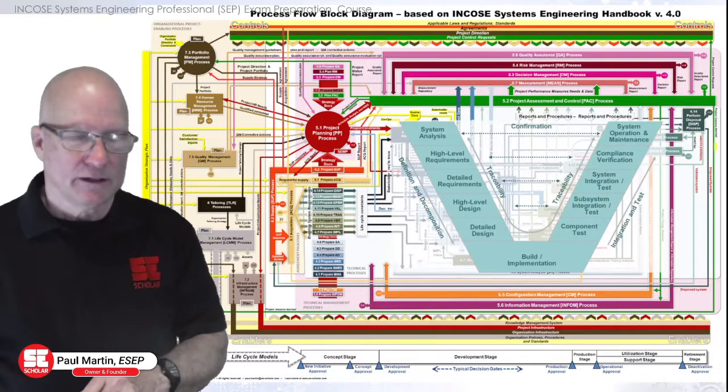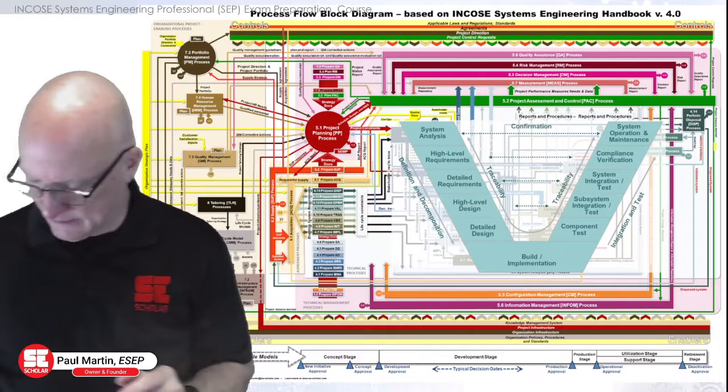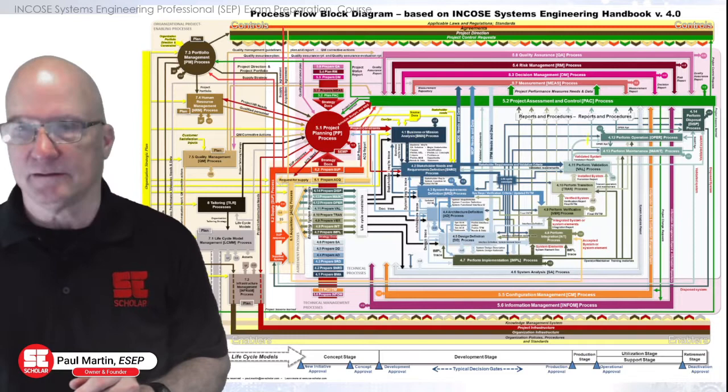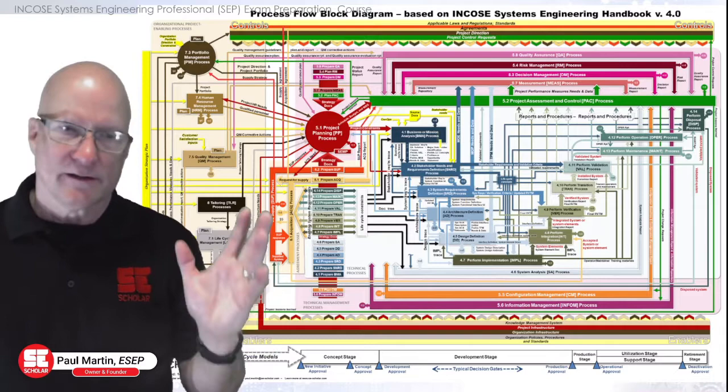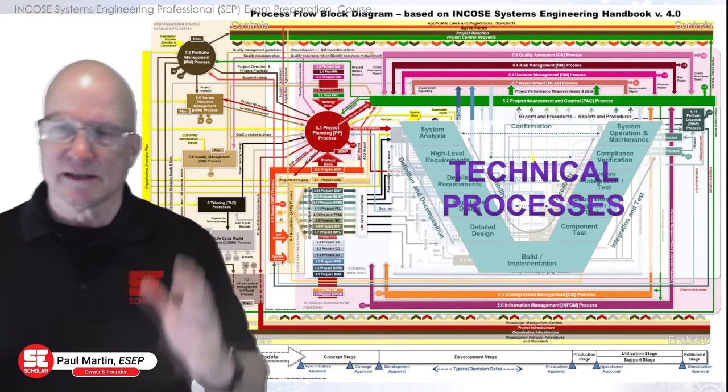The way I want you to think of my chart every time you look at it: the center is that famous systems engineering V. And it does a pretty good job of showing things from the left side going to the right side as you look at it. That's where the systems engineering V is, and that's where all the technical processes live.